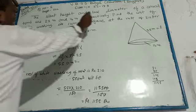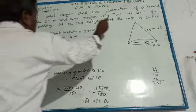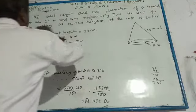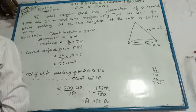The slant height and the diameter of a conical tent are 25m and 14m respectively. Find the cost of whitewashing its curved surface area at the rate of Rs 210 per square meter.